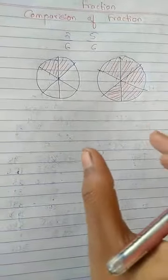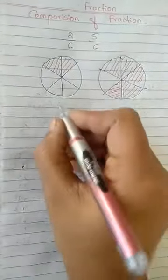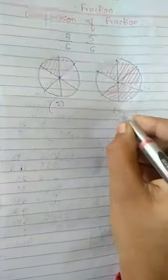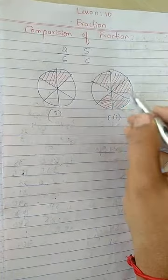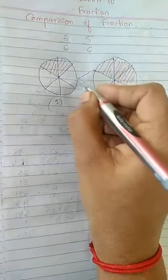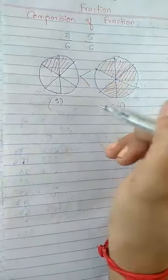Now can you identify in which figure you can see more shaded portion, in the first figure or in the second figure? This is 1st and this is 2nd. In the second figure we are seeing more shaded portion. Hence, this figure is greater than this one.